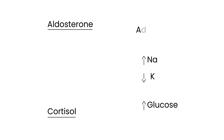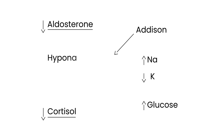In Addison's disease, because you have a deficiency, you will have the opposite results since these hormones are either absent or very low. So in Addison's disease you will have hyponatremia — low sodium levels in the blood — and hyperkalemia. Similarly, because of cortisol deficiency, you have hypoglycemia.